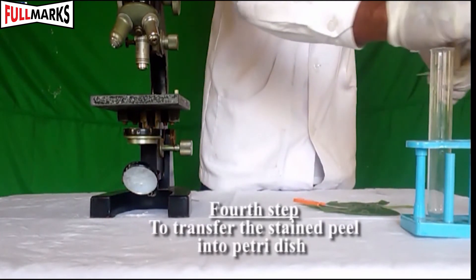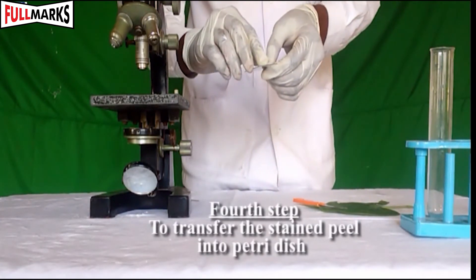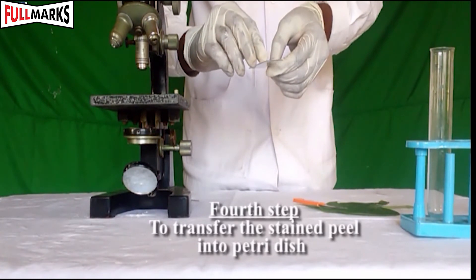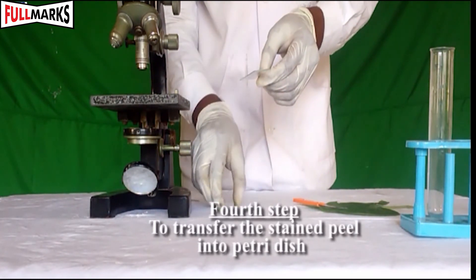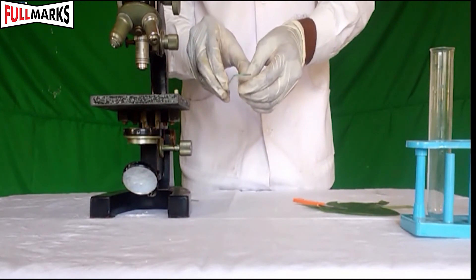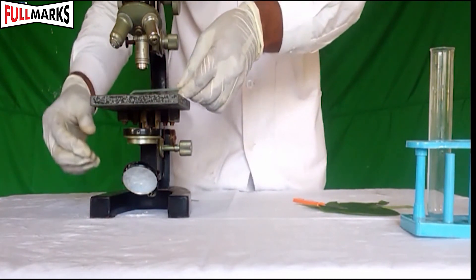Now take a clean slide and transfer the stained peel on the slide. Ensure that the slide is clean and place it under the microscope and record your observations.